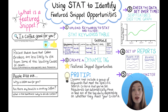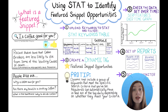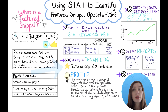Once you've found all those keywords, there's a really smart, useful way of collecting them all together, and that's by putting them into a dynamic tag. This lets you group those keywords together and label them — you could call this tag "featured snippet opportunities", for example.